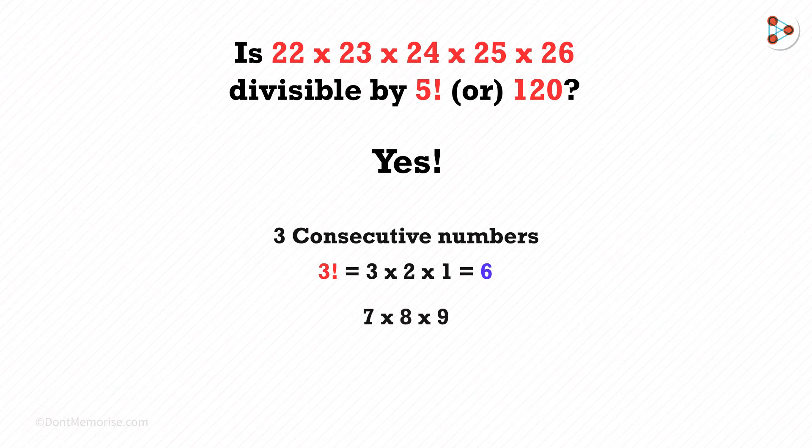7 multiplied by 8 multiplied by 9. And if you think about this breakdown, then we get 7 multiplied by 2 cubed multiplied by 3 squared. And here we check this 6. And this is 3 factorial divisible.